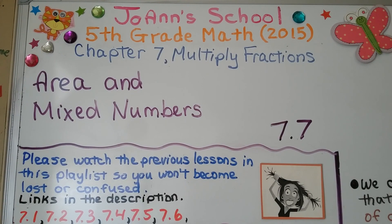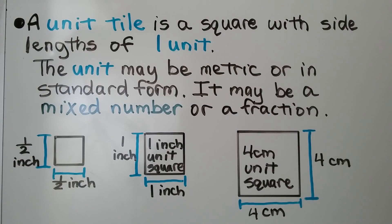Lesson 7.7: Area and Mixed Numbers. A unit tile is a square with side lengths of one unit. The unit may be metric or in standard form. It may be a mixed number or a fraction. It could even be a whole number.